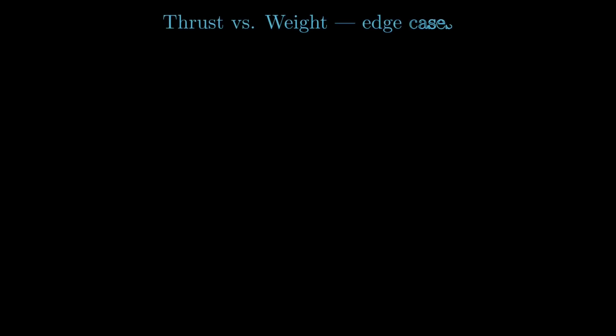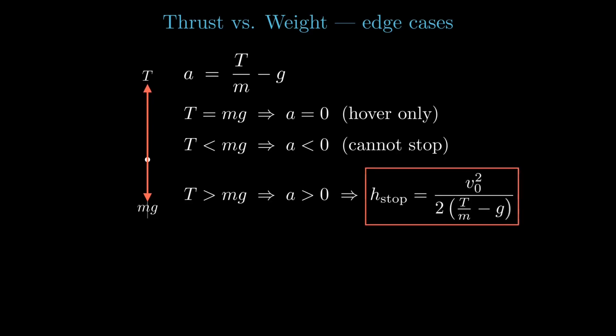Now let's check out some of the edge cases. If thrust equals mg, you can hover but you can't reduce the speed to zero any faster. Now if thrust is less than mg, the net acceleration is downwards, and you can't stop before crashing into the pad. And if thrust t is greater than mg, the net acceleration is upwards, thus giving a finite stopping height and a short stopping time.